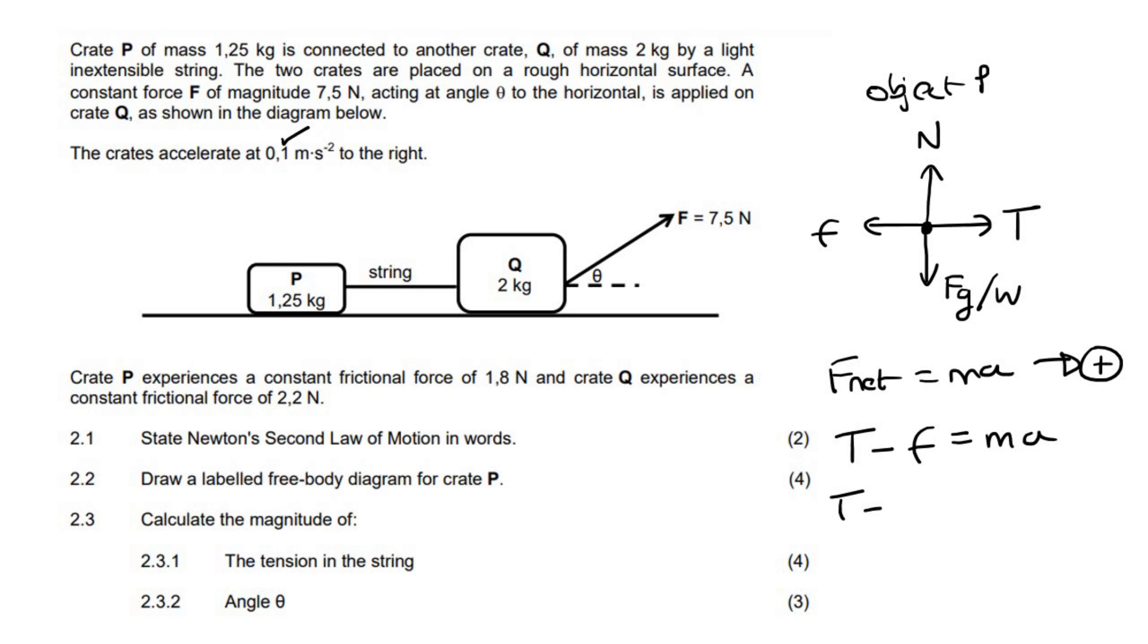So the tension we don't know. The friction force, they said the friction was 1.8 newtons and 2.2 newtons. So 1.8 for that one. Its mass is 1.25 and its acceleration is 0.1. You see what I mean? There's only one unknown.